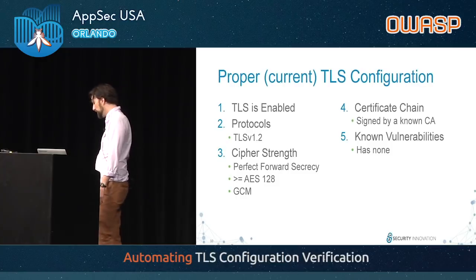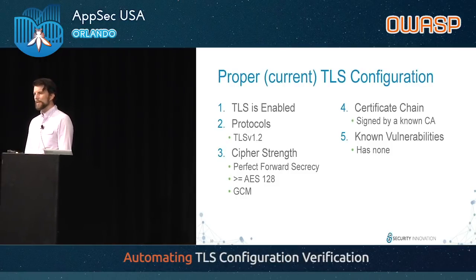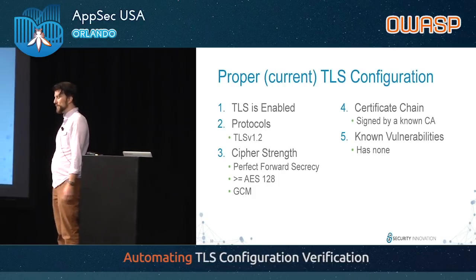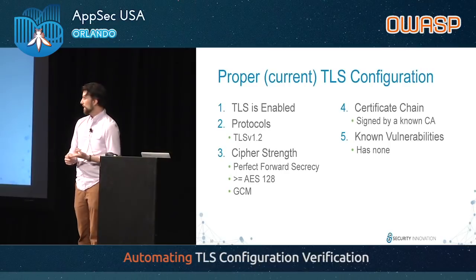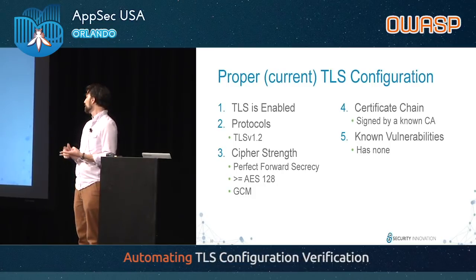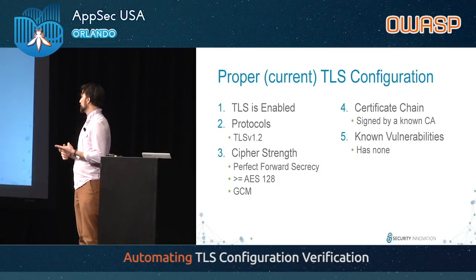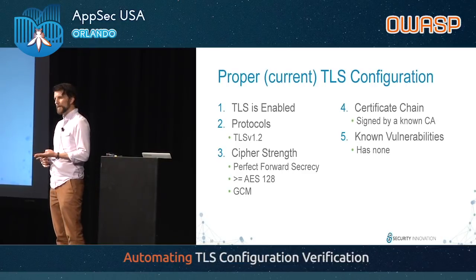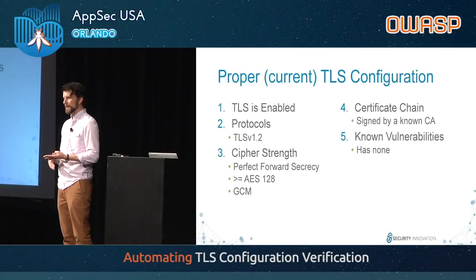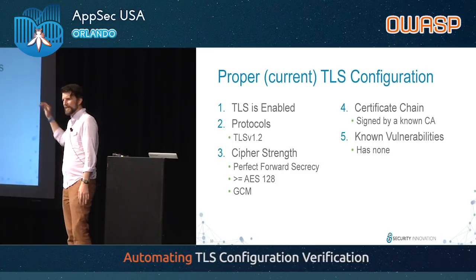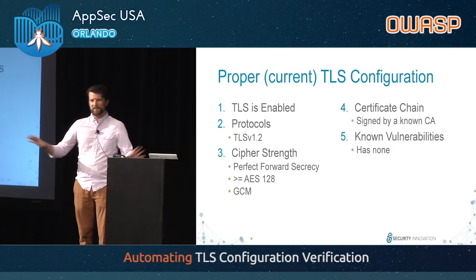Quick overview of TLS configuration: there are five things we want to get right and validate. Number one: is it enabled? Number two: are we using the latest protocols — right now TLS version 1.2. Number three: cipher strength — do we have perfect forward secrecy, enough bits, a mode without known vulnerabilities? Fourth: the certificate chain — trusted CA at the top, signed intermediate and server certificates. And fifth: the known, cutely named vulnerabilities. I was tempted to put in an 'is this a Pokémon or a TLS vulnerability?' slide, but I left it out.